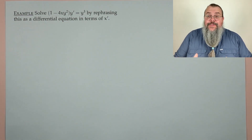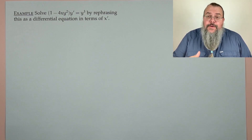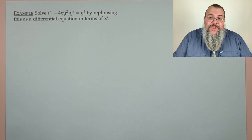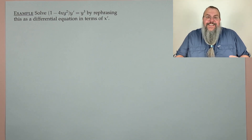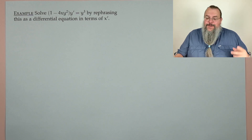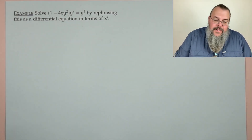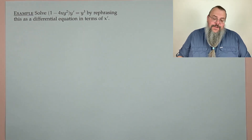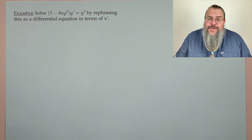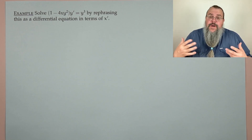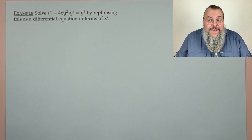Next example: solve (1 − 4xy²)y′ = y³. This isn't linear — there are y-cubed and y-squared terms. But the problem says to rephrase it as a differential equation in terms of x′, treating x as a function of y.